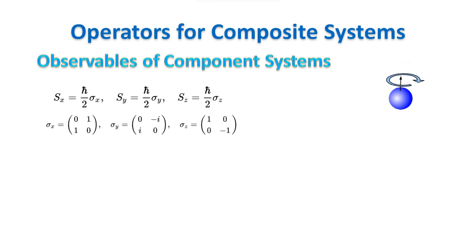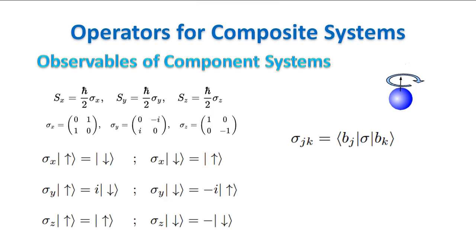Once you know how an operator acts on the basis vectors, you know everything about it. This is because of the definition itself of the matrix representation of linear operators, which is given by this equation, where BJ and BK are two basis vectors, and sigma JK is the relevant element in the matrix representation of sigma. For example, suppose we do not know the sigma matrices but we know how they act on the basis vectors. Suppose we want to know the one-two element of the sigma y matrix.